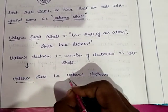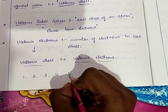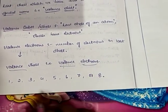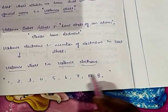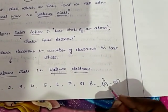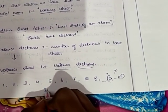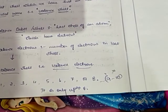Valence electrons are the number of electrons in the last shell. The number of valence electrons can be one, two, three, four, five, six, seven, or eight. It won't be more than eight — it cannot be nine or ten.